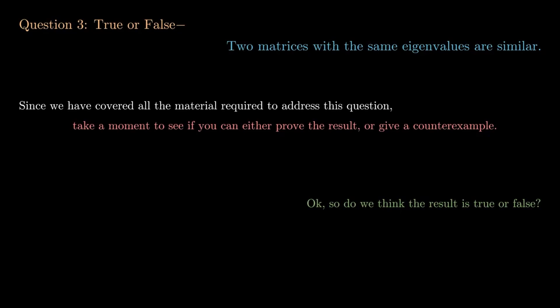So do we think the result is true or false? Well, let's consider the matrices A and B given here. So A is the matrix with ones along the diagonal, zero elsewhere, and B is the matrix with ones everywhere except for the second row, first column, which will have zero in that entry.